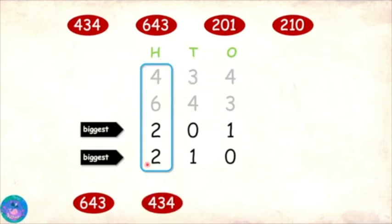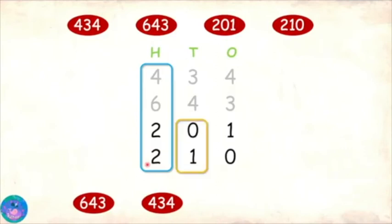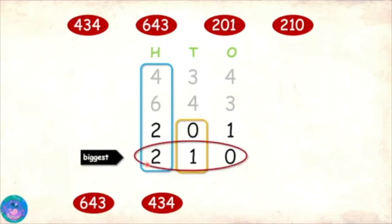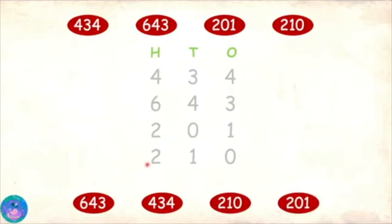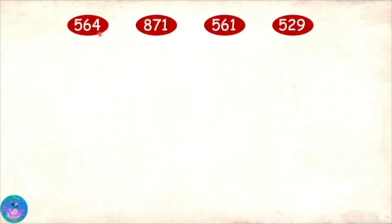Now we are left with two numbers and both have 2 in the hundreds place. We will compare the tens digits — 1 is bigger than 0, so next will be 210, and then we are left with 201. Correct! One more please!